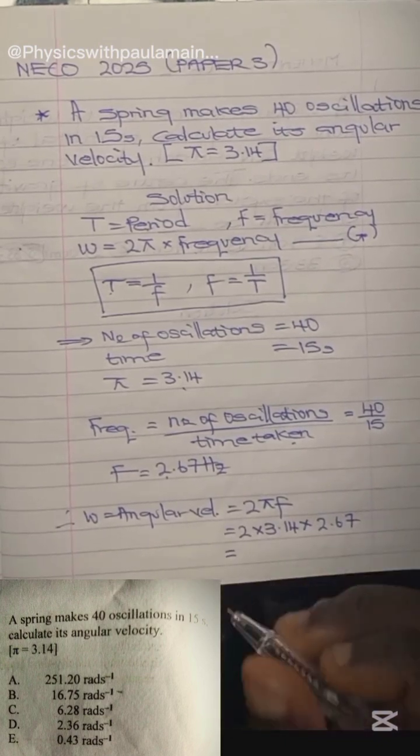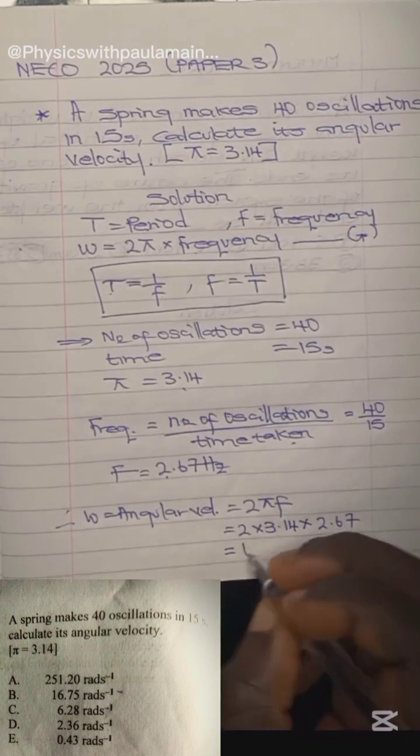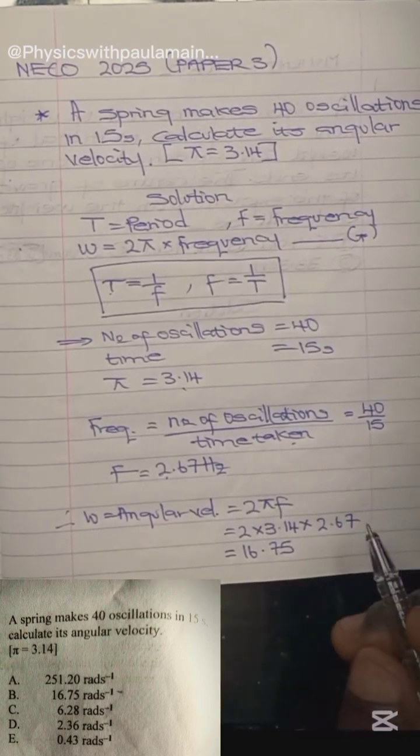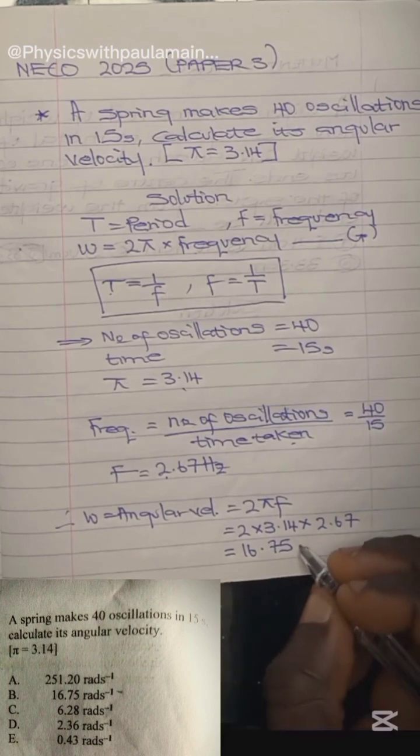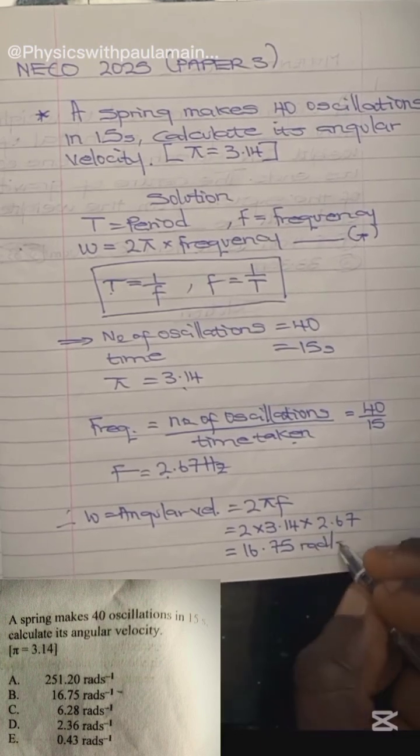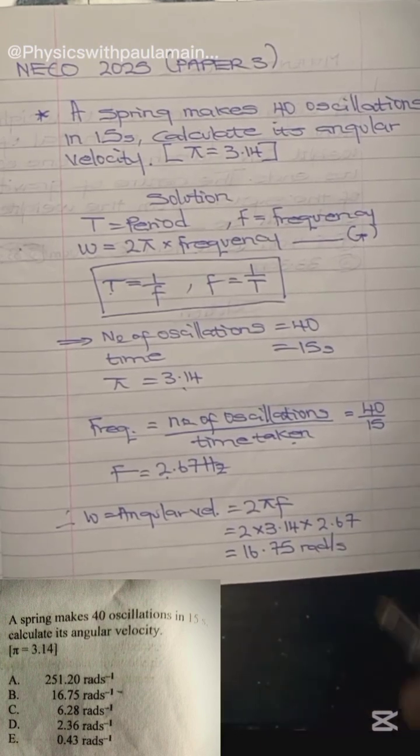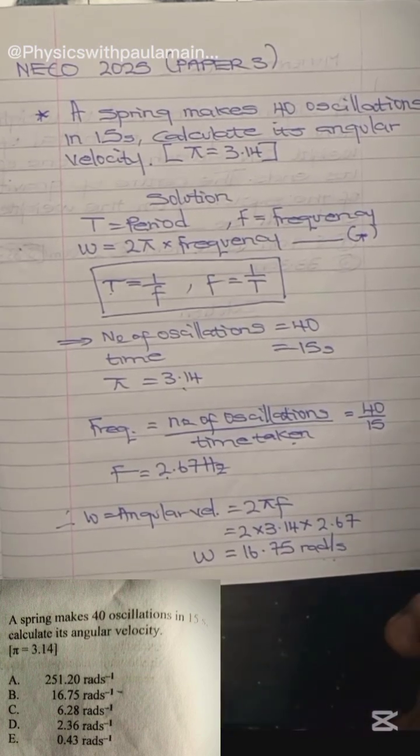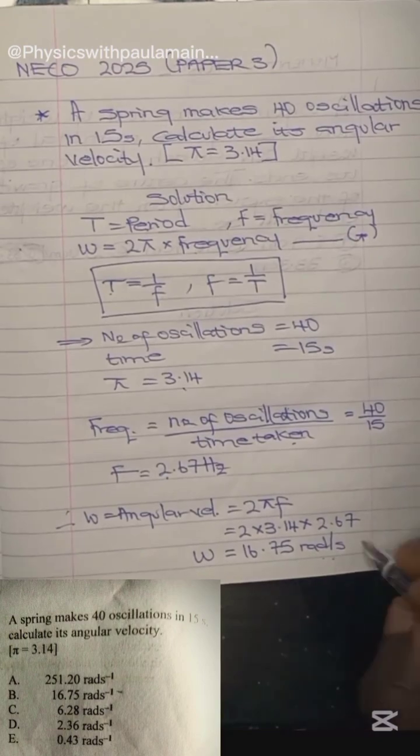Angular velocity, unlike linear velocity measured in meters per second, is measured in radians per second. So this is the solution to this particular question. Option B is our correct answer: 16.75 rad/s.